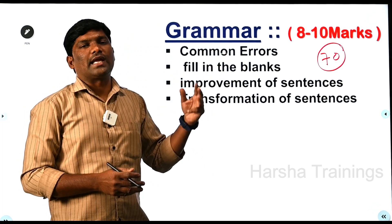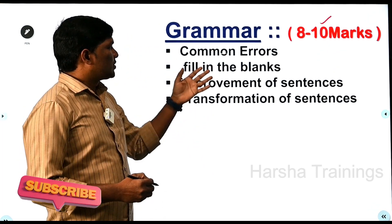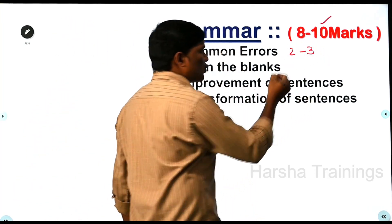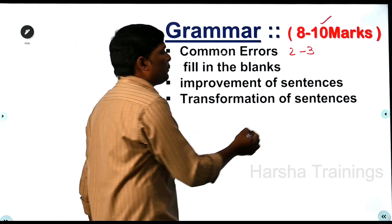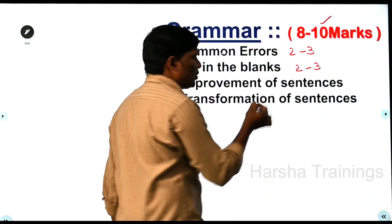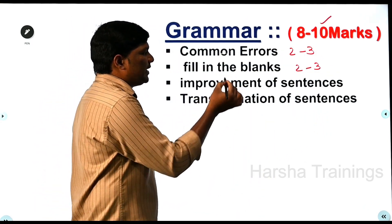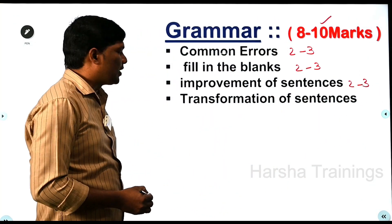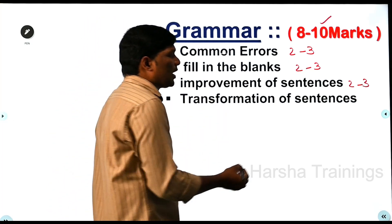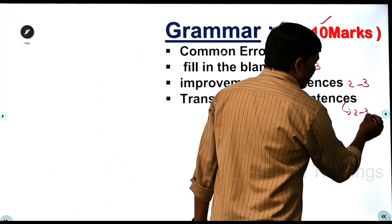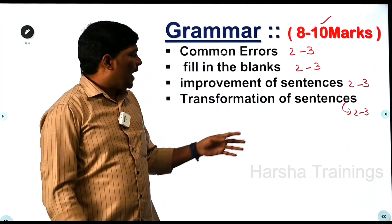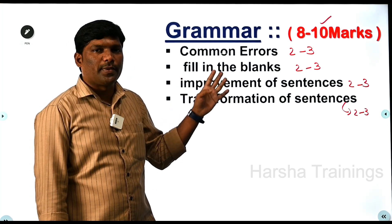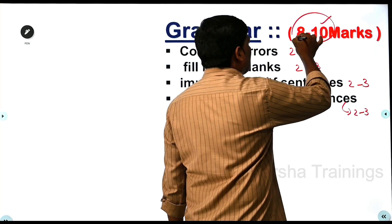We divide the English concept into 3 main categories. First, if you have prepared common errors properly, there are 2-3 questions. Next, fill in the blanks — 2-3 questions. Next, improvement of sentences — 2-3 questions. And transformation of sentences — 2-3 questions. If you have prepared these 4 concepts properly, there are approximately 8-10 marks.